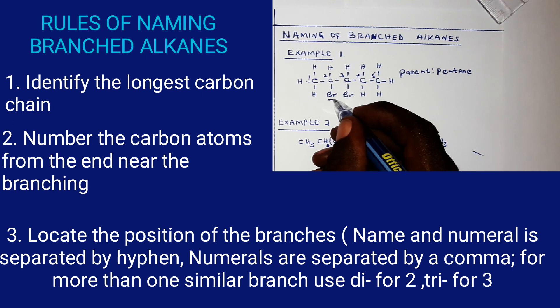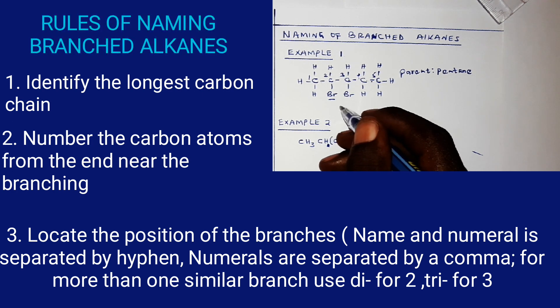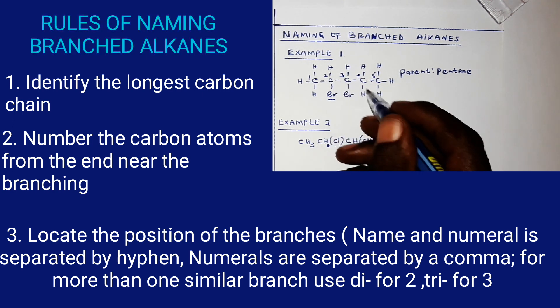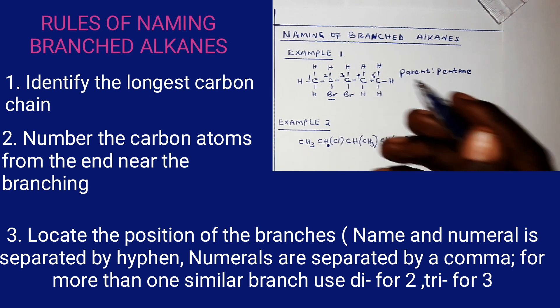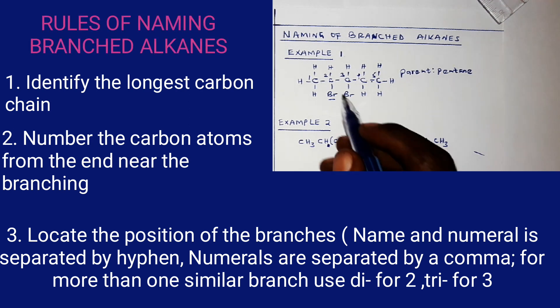So this bromine atom is a branch attached to the second carbon atom. Then we have a bromine atom attached to the third carbon atom. So now we have two branches: two-bromo and three-bromo.